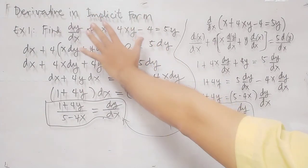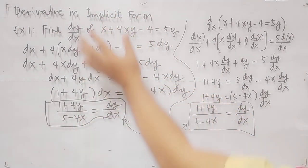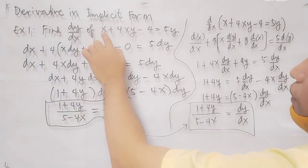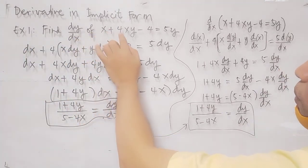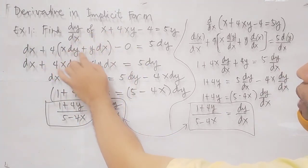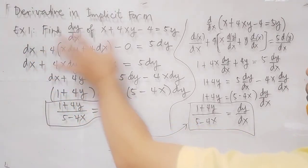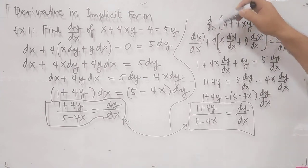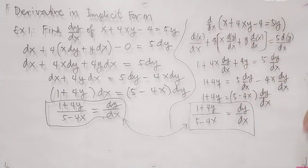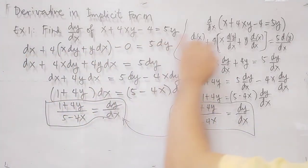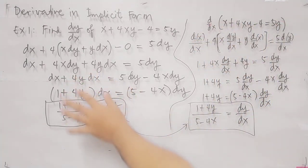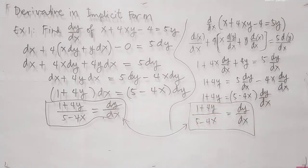In summary, you have two ways to solve derivatives in implicit form: you can use d, or you can use d over dx. With the first process we apply d to each variable; in the second we distribute d over dx directly. Both approaches yield the same final answer.